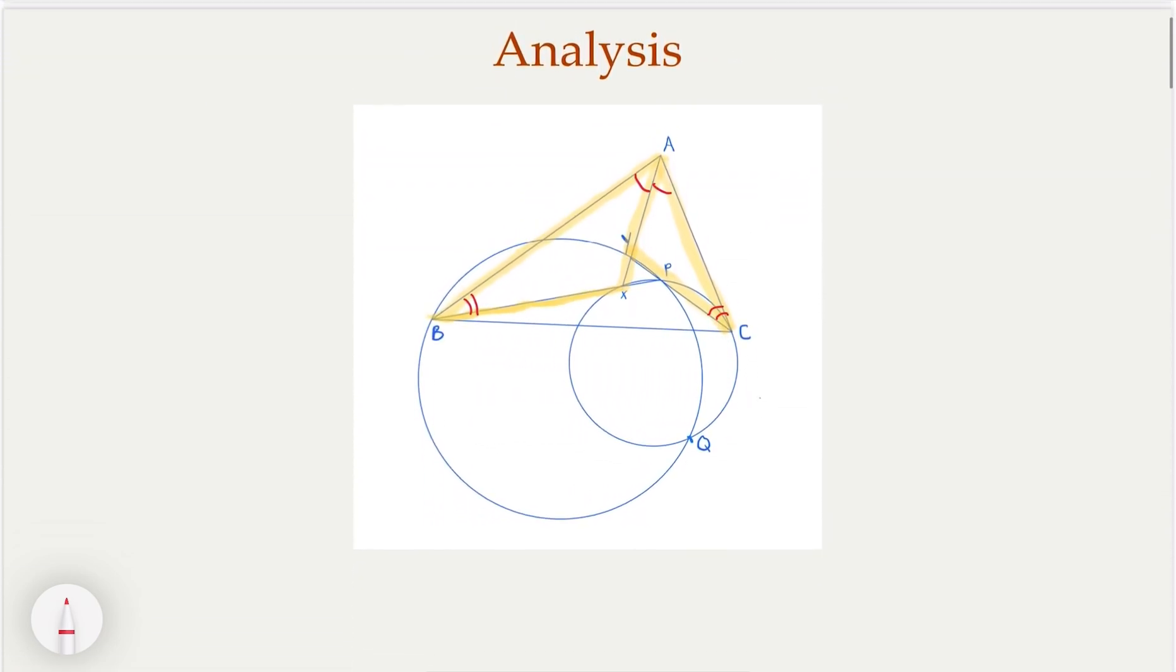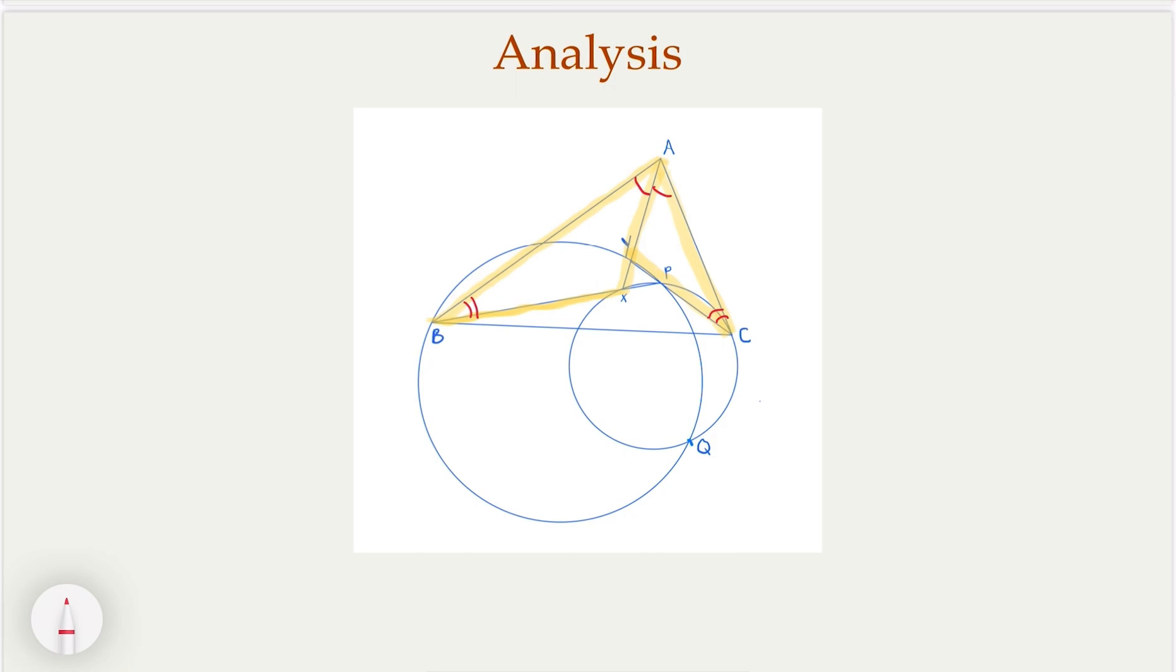Let's do some initial analysis here. We're given bisector of the angle, and another angle pair are the same, then we have immediately similar triangles as marked. In other words, I claim triangle ABX is similar to triangle ACY, because angle angle are the same.